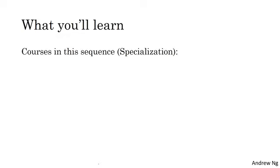So here's what you learn in this sequence of courses, also called a specialization on Coursera. In the first course, you learn about the foundations of neural networks. You learn about neural networks and deep learning. This video that you're watching is part of this first course, which lasts four weeks in total. And each of the five courses in this specialization will be about two to four weeks, with most of them actually shorter than four weeks. But in this first course, you learn how to build a neural network, including a deep neural network, and how to train it on data.